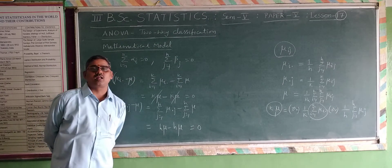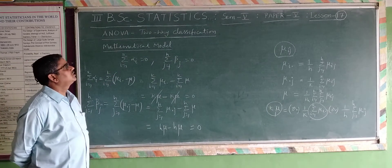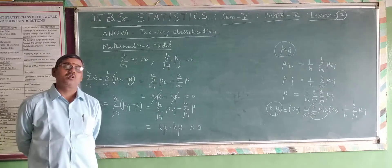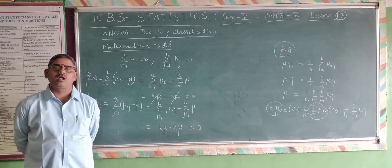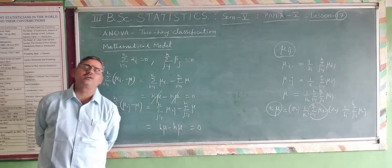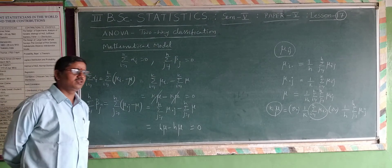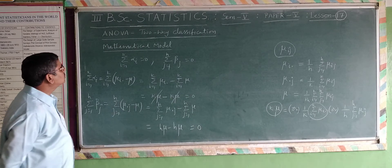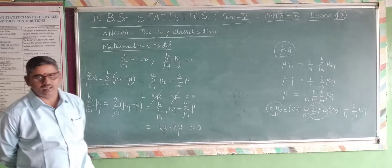Remember: summation i equals 1 to k of alpha i equals 0, and summation j equals 1 to h of beta j equals 0. These are the two values proved in this mathematical model. Please also read the formulas for y bar i dot, y bar dot j, y bar dot dot, ti dot, t dot j, and G, and prepare for the two-way classification analysis. In this lesson we have learnt the mathematical model of two-way classification. Thank you.